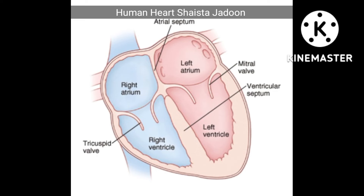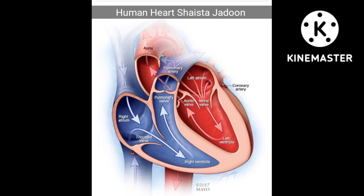The heart is separated by a wall called the ventricular septum, which makes a division between the interventricular chambers. There are two more valves inside the heart: the pulmonary valve and the aortic valve.